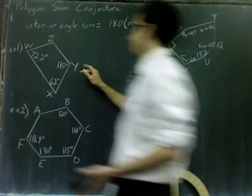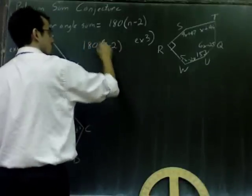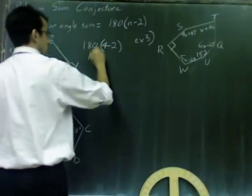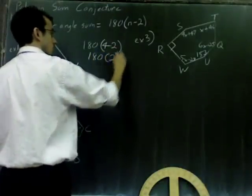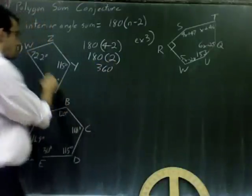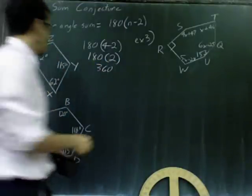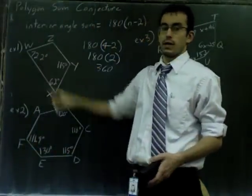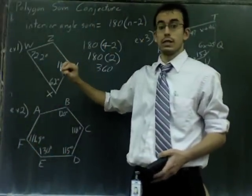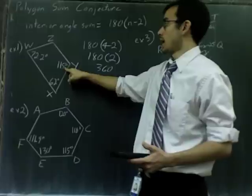So let's try that. 180 times 4 minus 2. In this case, 4 minus 2 is just 2, so this really just says 180 times 2. If you do that on a calculator, 180 times 2 is 360. So I know if I add up these four angles, I should get 360. Right now I know three of them, and I want to know the last one. That's what I'm usually going to ask you.